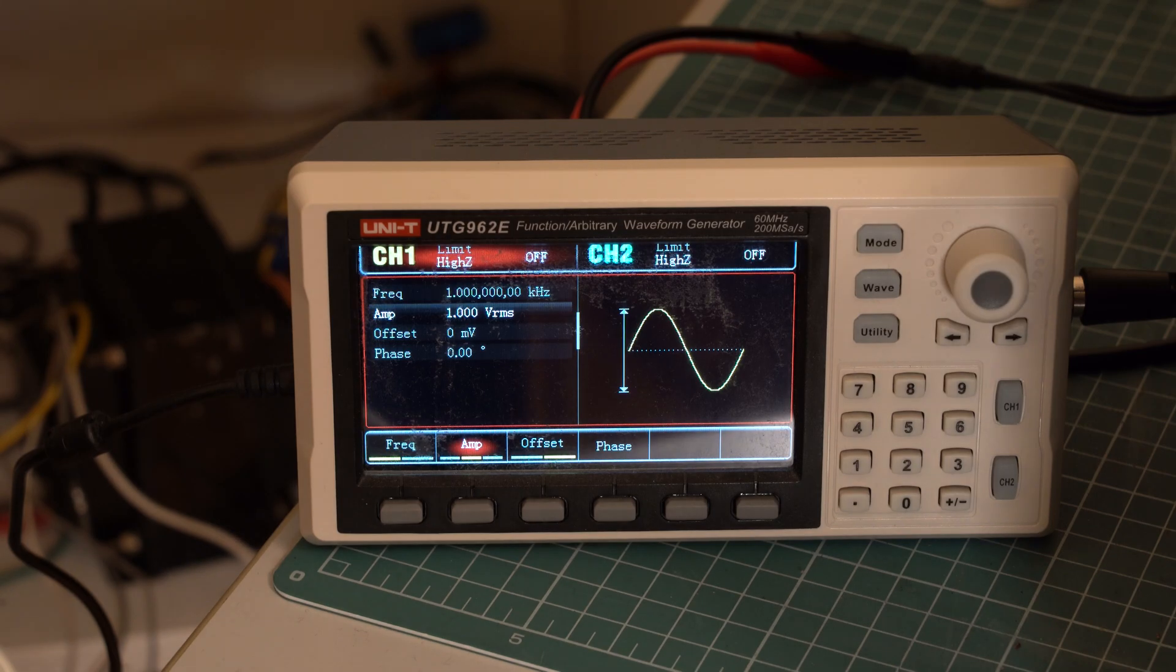Also the amplifier's input will be driven by this signal generator. That's because characterizing an amplifier while playing music is a really hard thing to do, because the waveform of the music is really unpredictable. So I need a nice and predictable signal, like a sine wave. That's why the signal generator is set to 1 kHz sine wave, 1 volt RMS.